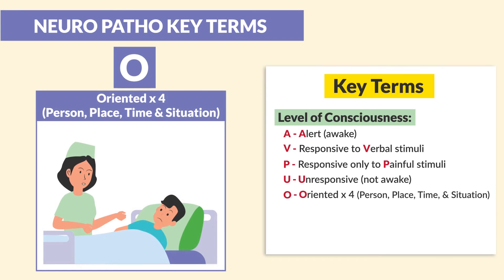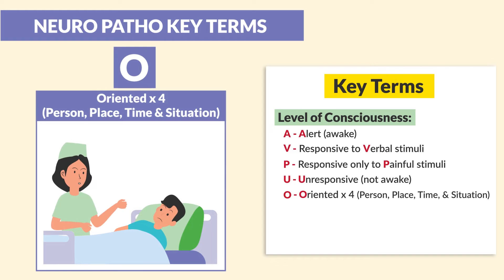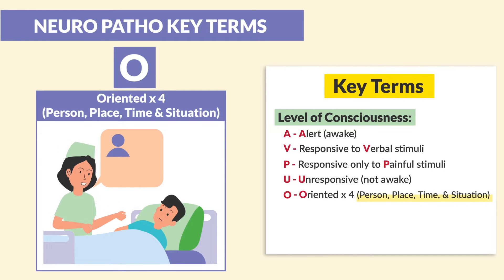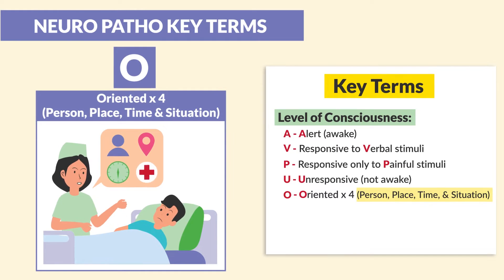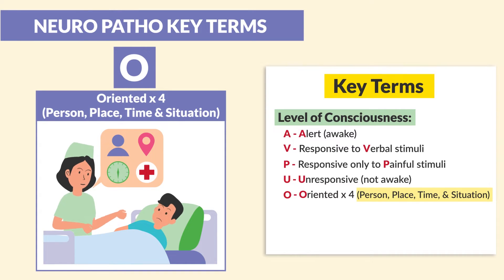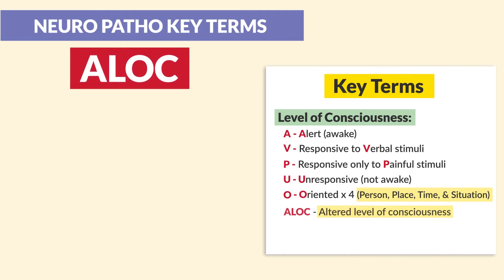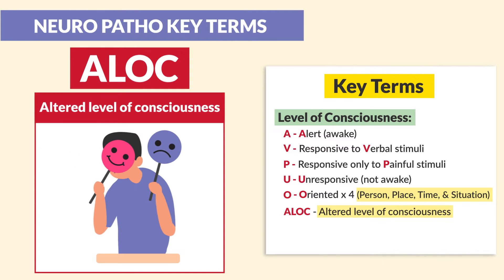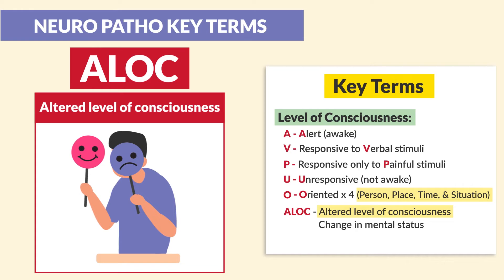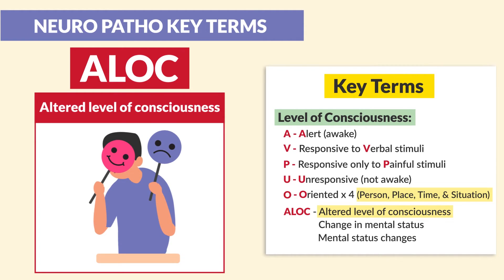O is for orientation, or oriented. Clients will typically be asked four different questions — for example, person, place, time, and situation. If the client knows all four, then they're oriented times four. ALOC is altered level of consciousness. This is also called a change in mental status, or mental status changes.